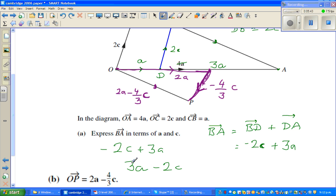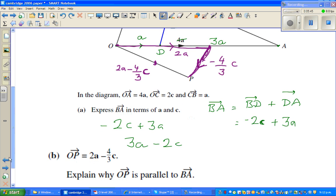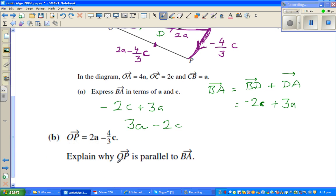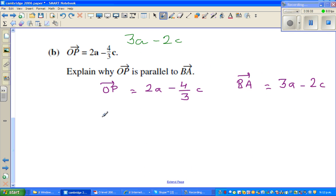Have got different magnitude but they have the same, you can say, OP is 2a minus 4/3 c and vector BA is 3a minus 2c. So therefore we can say.